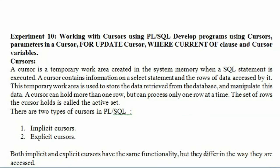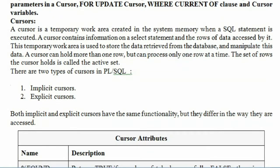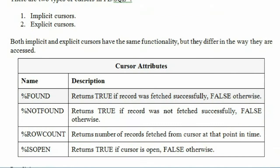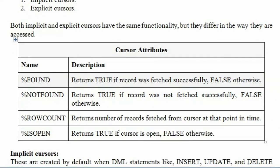There are two types of cursors: the first is implicit cursor and the second is explicit cursor. Implicit cursors are the cursors created by your DBMS internally. Before looking into implicit cursors, let us look at cursor attributes. These cursor attributes are implicit ones provided with the DBMS. The attributes are %FOUND, %NOTFOUND, %ROWCOUNT, %ISOPEN, and %ROWTYPE. These are all cursor attributes given internally, and you can use them accordingly.